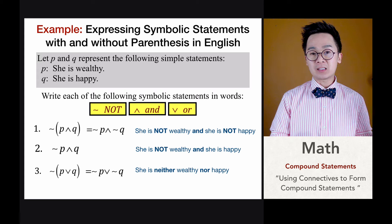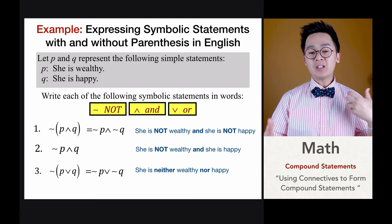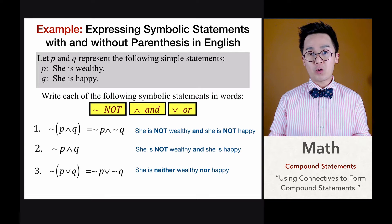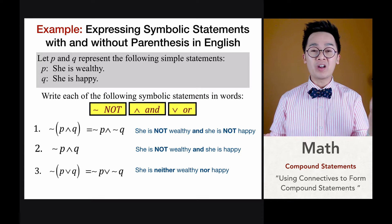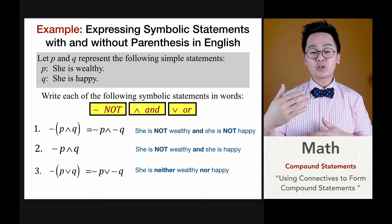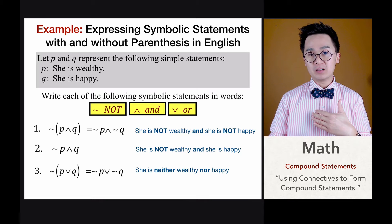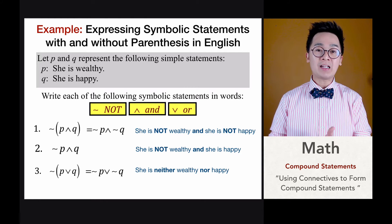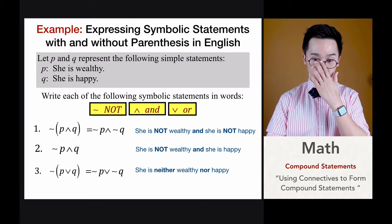This is how we translate symbols into English form, similar to how we translate one language to another. The more words we learn in a foreign language, the more we can translate to English. Similarly, in symbolic logic, the more symbols we understand, the more English compound statements we can form from those symbols.